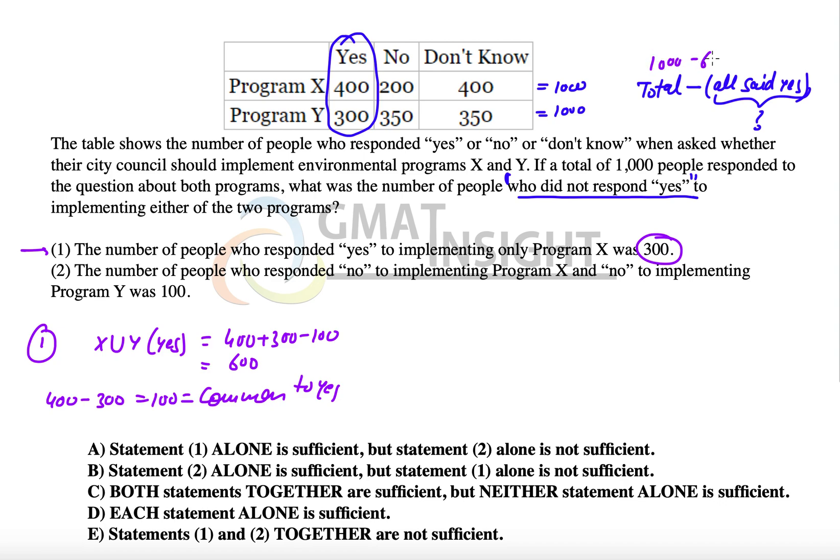That means the people who did not say yes will be 1000 minus 600, which equals 400. The first statement alone is sufficient to answer the question, which leaves us with only two choices, option A and option D.